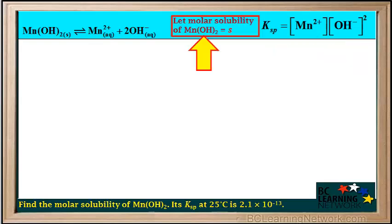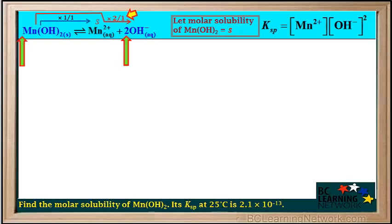Now we'll let the molar solubility of Mn(OH)₂ be represented as S. The mole ratio of Mn²⁺ to the compound Mn(OH)₂ is 1 to 1, so the concentration of Mn²⁺ will be equal to S. The mole ratio of OH⁻ to the compound Mn(OH)₂ is 2 to 1, so the concentration of OH⁻ will be equal to 2S.